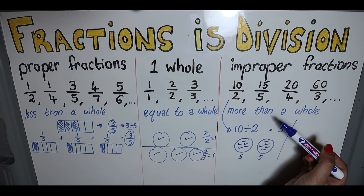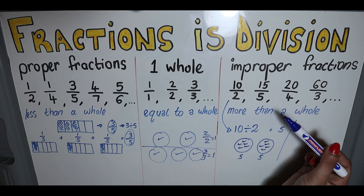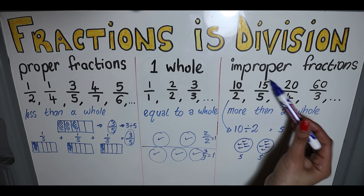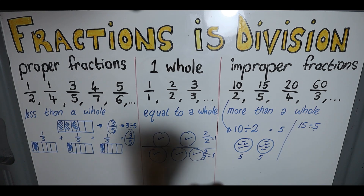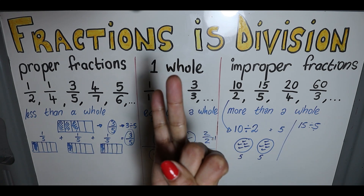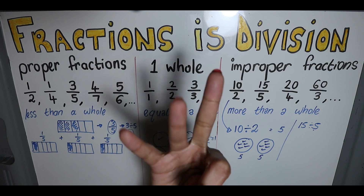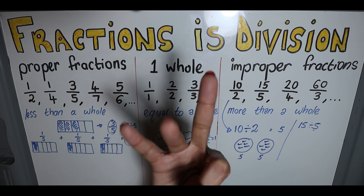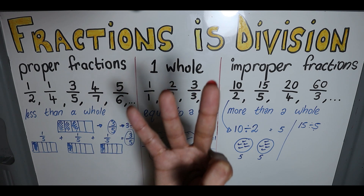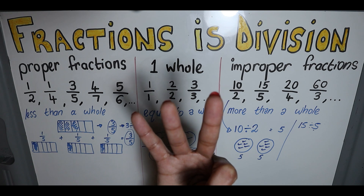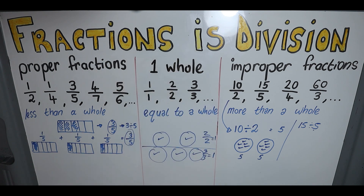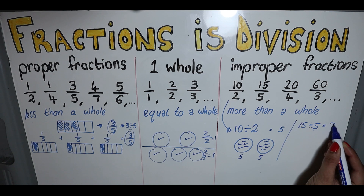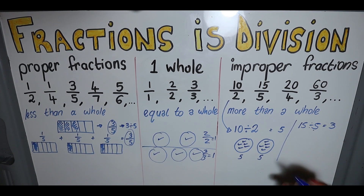Let's look at 15 divided by 5. The amount I have — 15 — is more than the groups I'm sharing into. Five, ten, fifteen — that means my answer is three. Each one will get three if divided into groups of five. Again, three is more than a whole, more than one, so you're getting more than one.